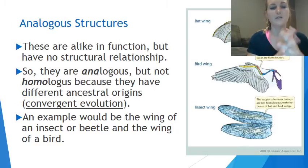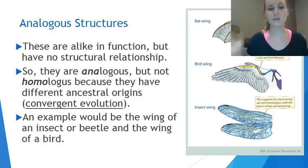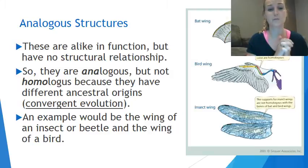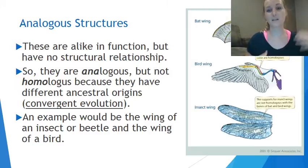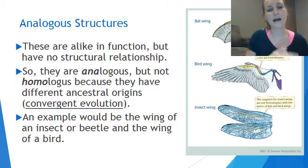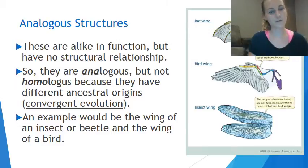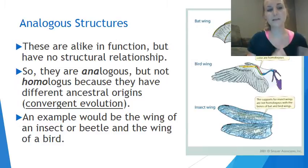Analogous structures are potentially alike in function — they can do the same thing or achieve the same function — but they don't have a structural relationship, meaning their structure can be very different. 'Ana' means different, so analogous means different structures, which is the complete opposite of homologous structures, where 'homo' means the same or uniform.